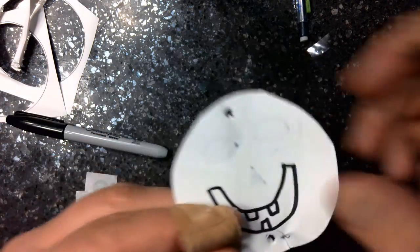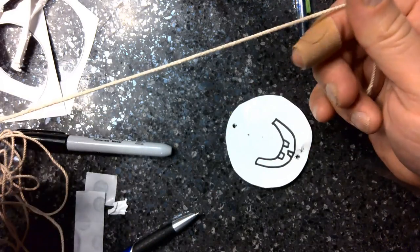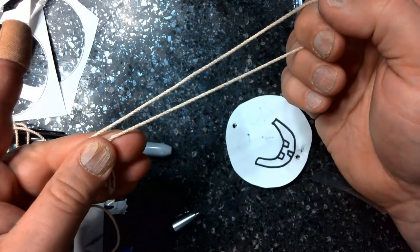Once you have your holes punched, take about 10 inches of thread and thread it through either side, tying it off at the ends to make a loop.